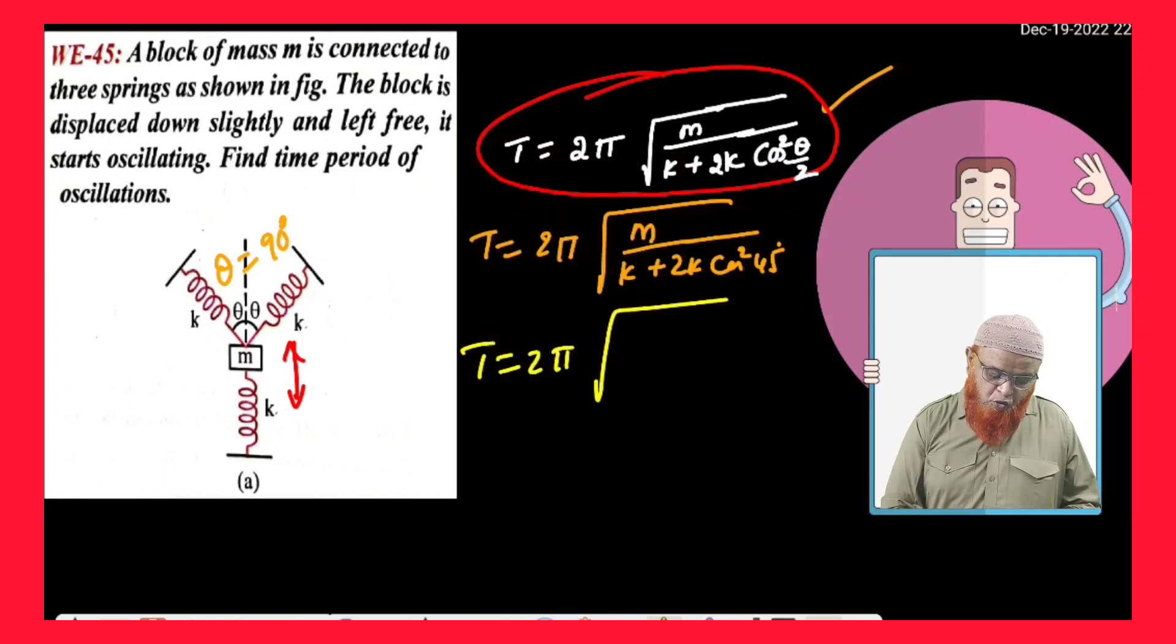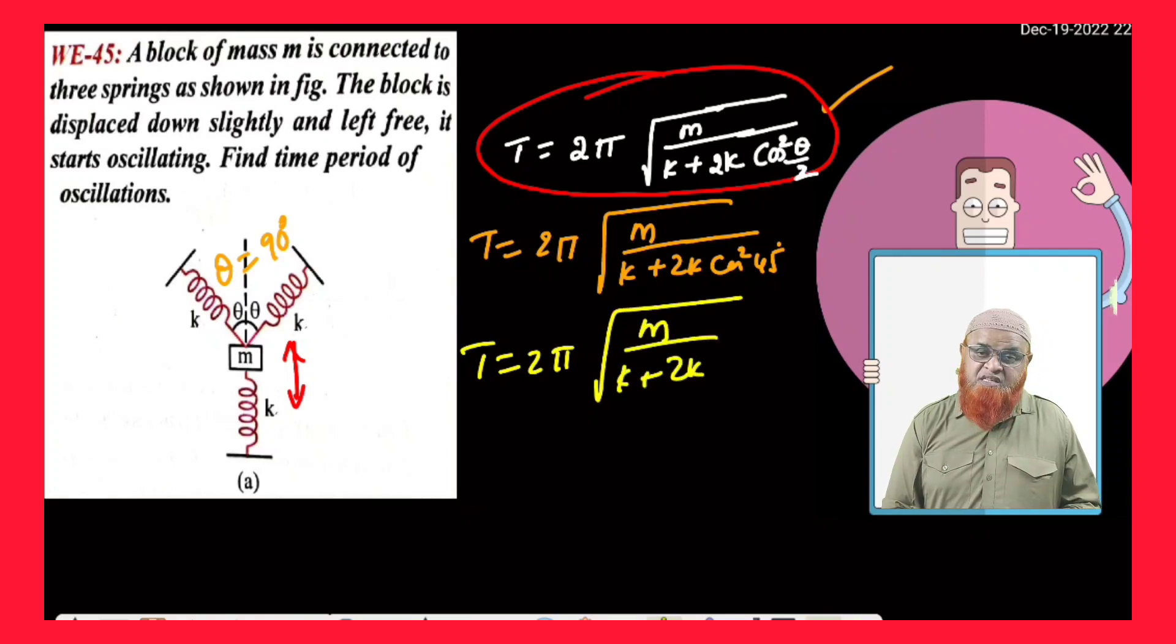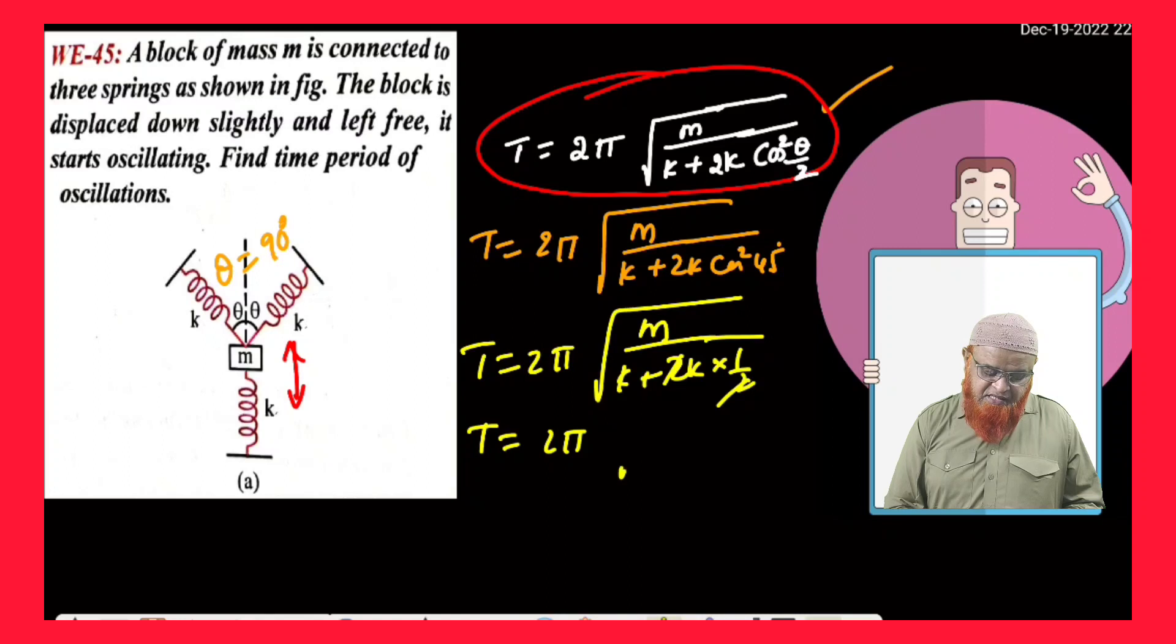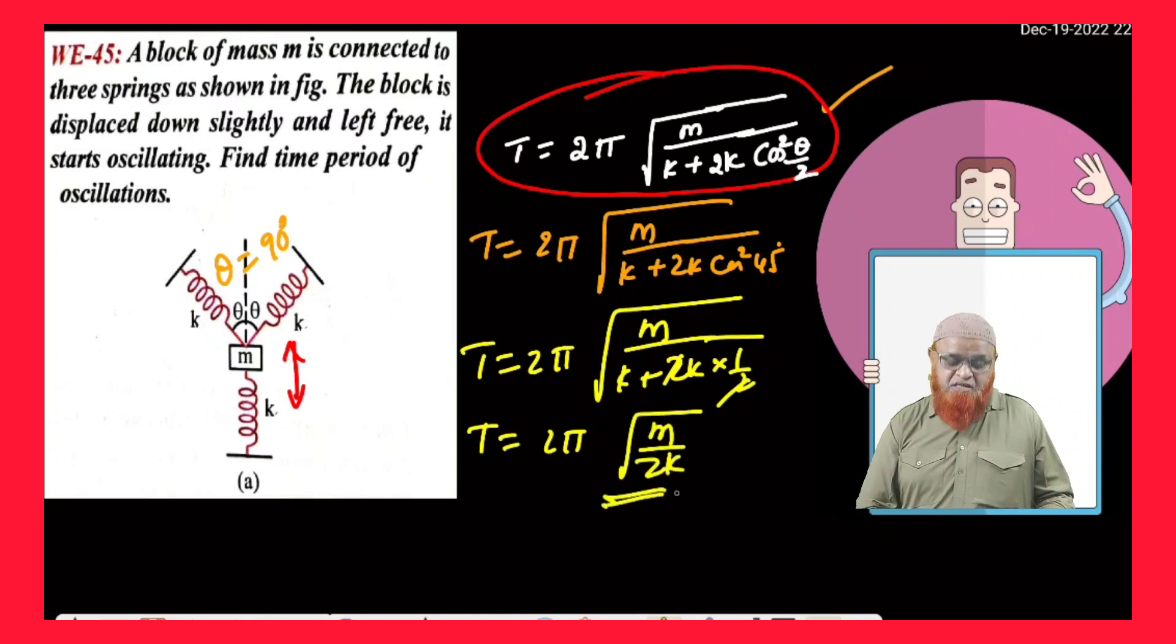Therefore, T is going to be 2π root of M by k plus 2k cos square 45, which is 1 by root 2 whole square, which is 1 by 2. So, 2, 2 gets cancelled. T is nothing but 2π root of M by 2k. This is going to be your answer.